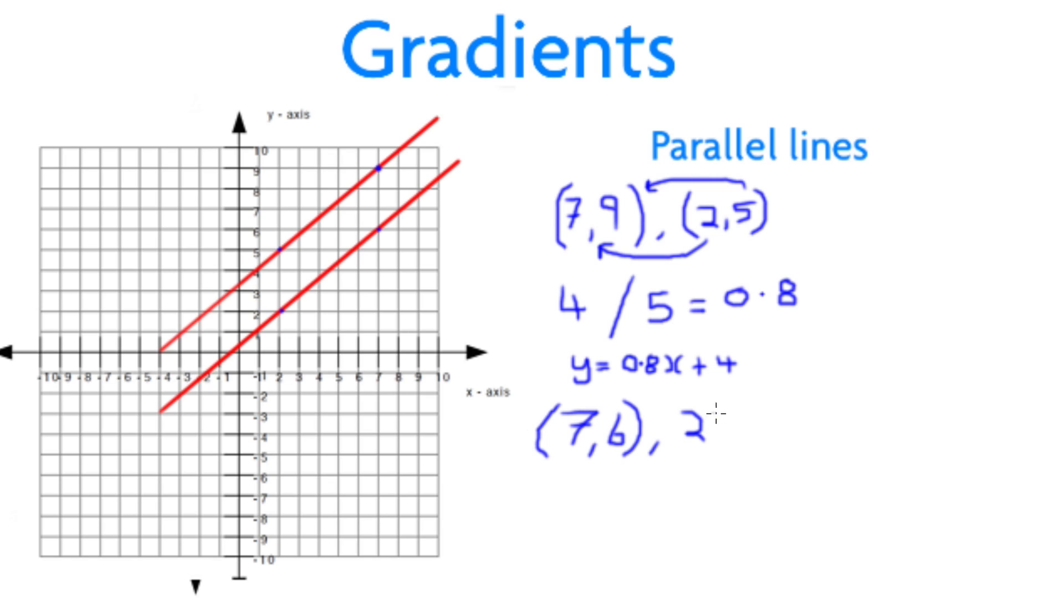Again, we know it will be parallel using the same coordinates as the x-axis, however, this will work just as well with any other practice question. So, going through, using the difference in y over the difference in x, we find again our equation results in 4 over 5, or 0.8. So, our line will be y equals 0.8x plus 1.5, where it crosses at our y-axis.